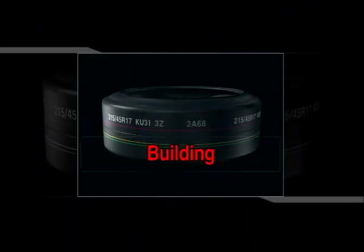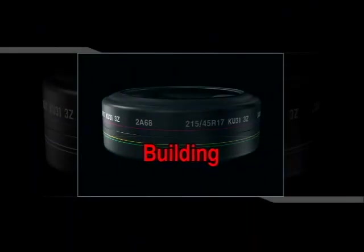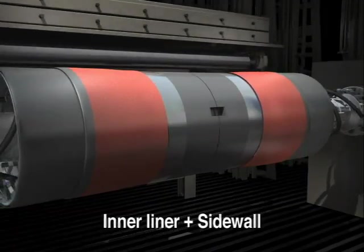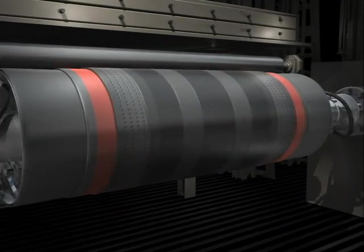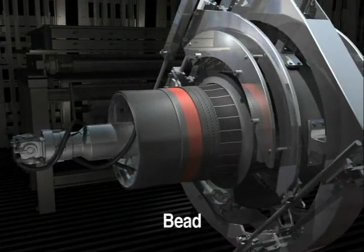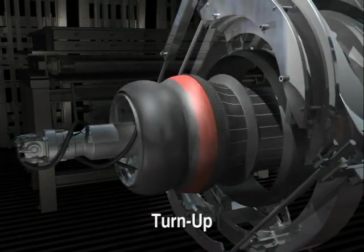The tire building machine and operator assemble all the extruded, calendared, and wound precision components to form the toroidal green tire. In the building process, the inner liner and sidewall are applied pre-assembled, followed by the body ply, the bead, and the turn-up.